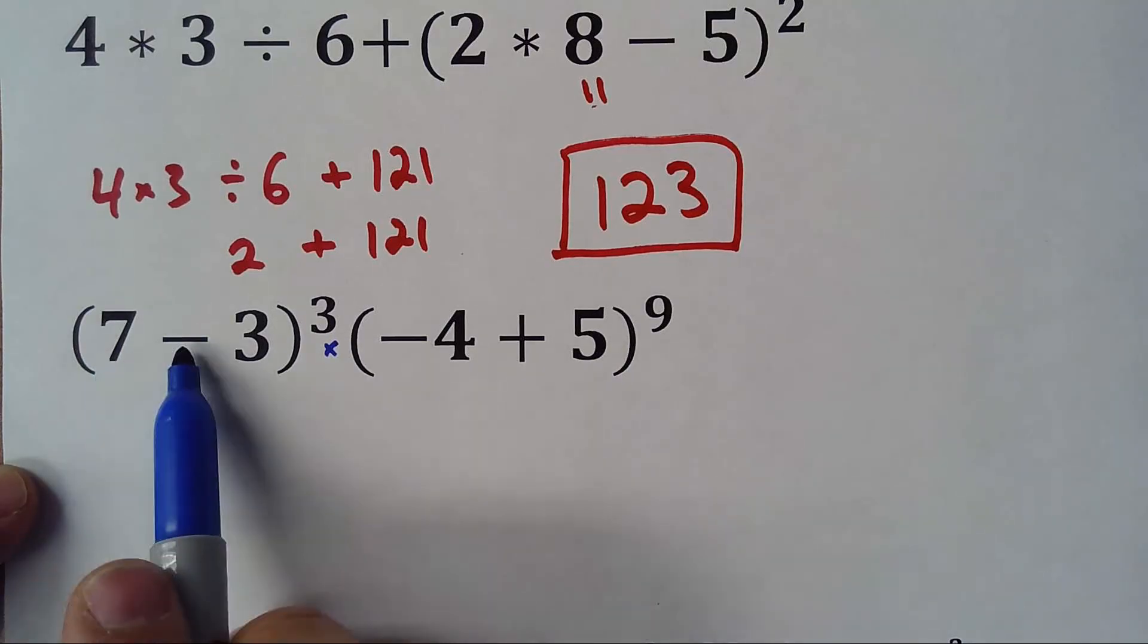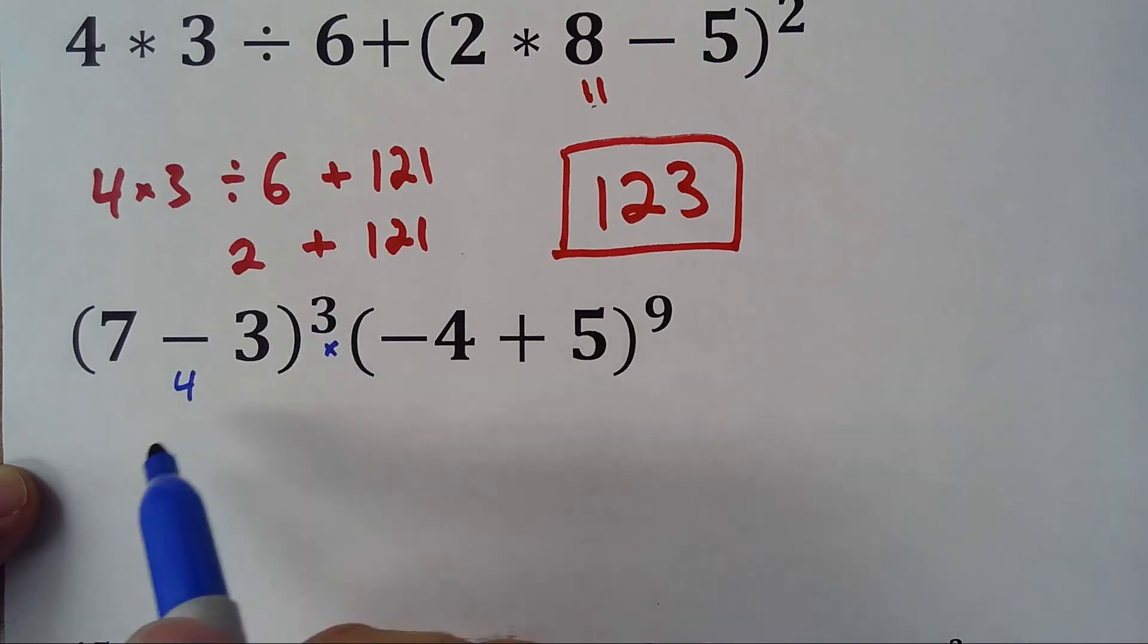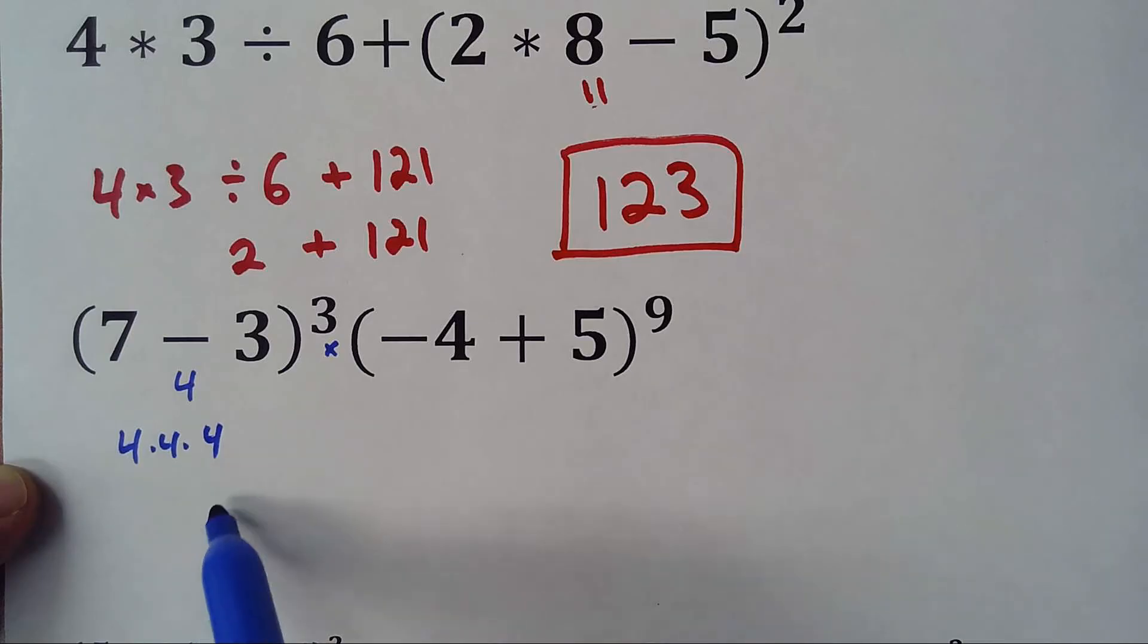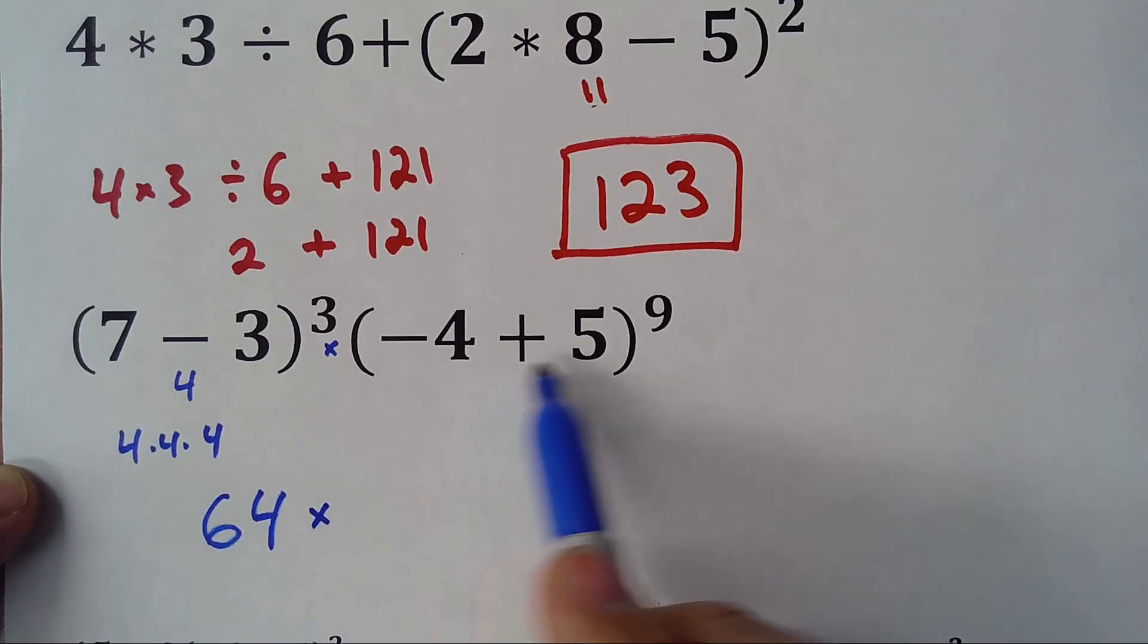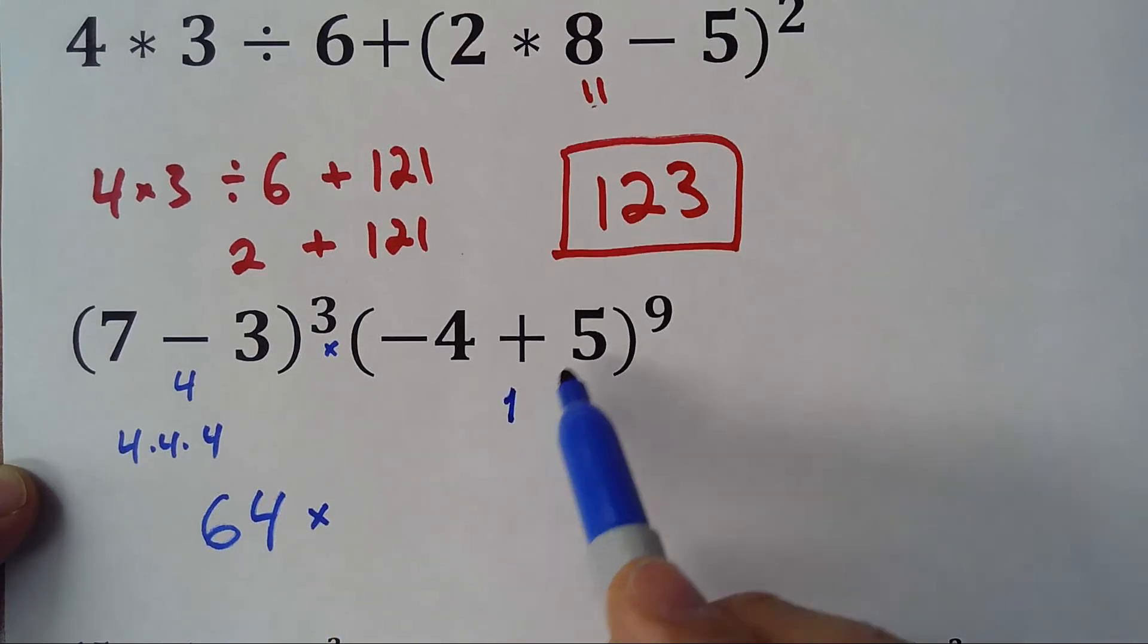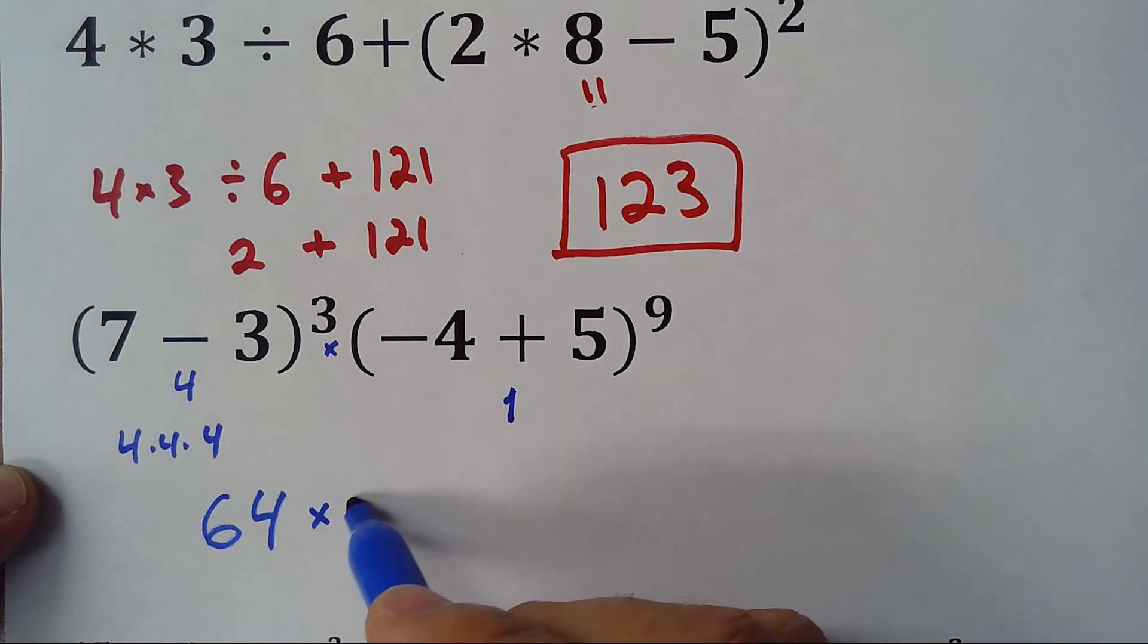So 7 minus 3 is 4, 4 raised to the third power, that means 4 times 4 times 4, which is 64. So 64 times whatever I have here, negative 4 plus 5 is just 1, is 5 minus 4 is 1, raised to the 9 is 1, so times 1, that will be equal 64.